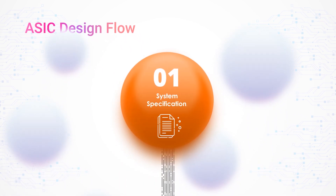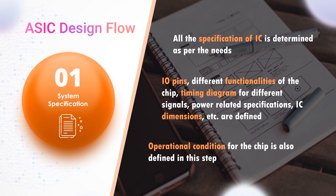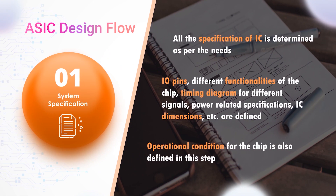System Specification: This is the step from which the design cycle begins. All specifications of the IC are determined as per the needs. This involves defining the input/output pins, different functionalities of the chip, timing diagrams for different signals, power-related specifications, and IC dimensions. The operational conditions for the chip are also defined in this step, as different operational conditions require different types of fabrication processes.